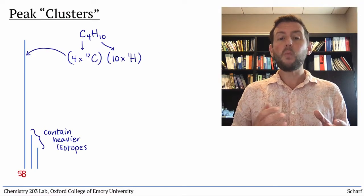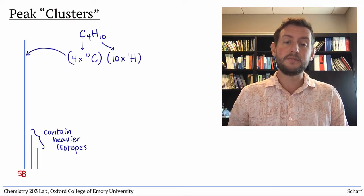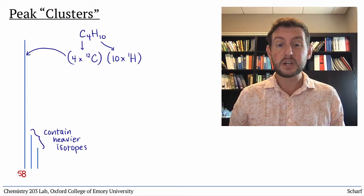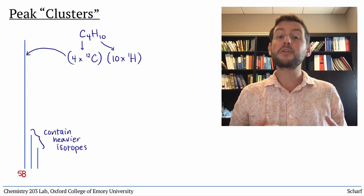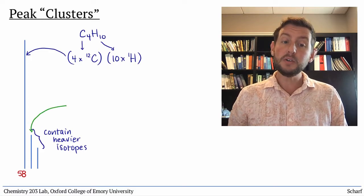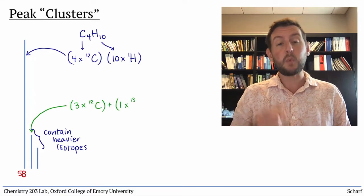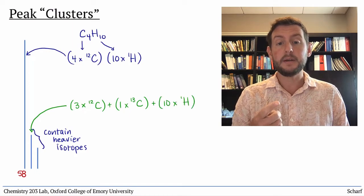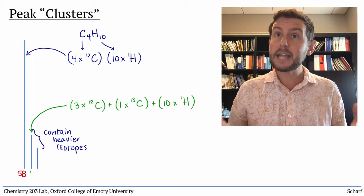But about 1.1% of naturally occurring carbon atoms are the isotope carbon-13. So a small number of butane molecules have one carbon-13 atom in them, and therefore a mass of 59 AMUs.